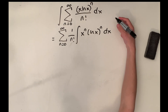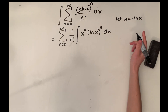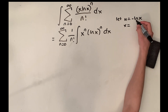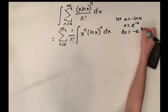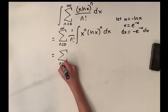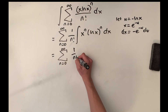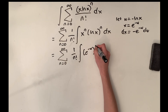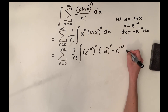The substitution I'll make is: let u equal negative ln(x) — I'll make it negative for a particular reason, and you'll see why in a second. That means x is going to be equal to e to the negative u, and dx is going to be equal to negative e to the negative u du. Substituting that back in, we'll have the sum from n equals zero to infinity of 1 over n factorial times the integral of (e to the negative u) to the n times (negative u) to the n times negative e to the negative u du.